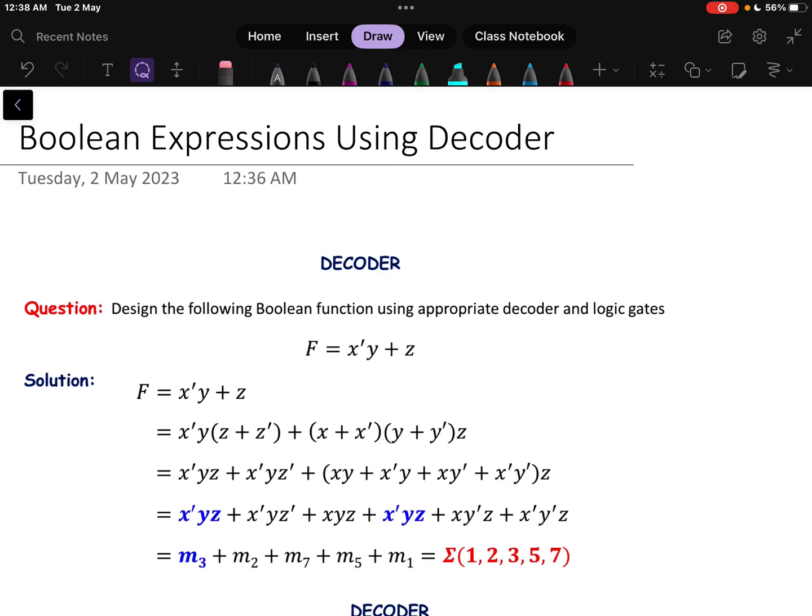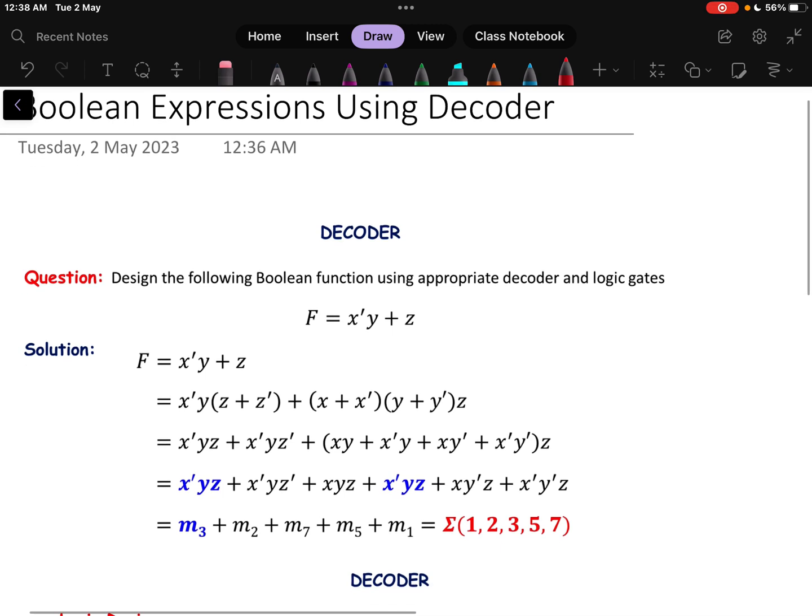In this video we will discuss how to implement any random Boolean function using a decoder. In this question it is asking that design the following Boolean function using appropriate decoder and logic gates, and the Boolean function is given as F equals to x dash y plus z.